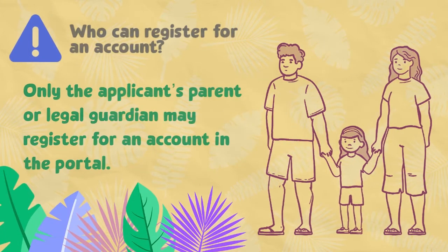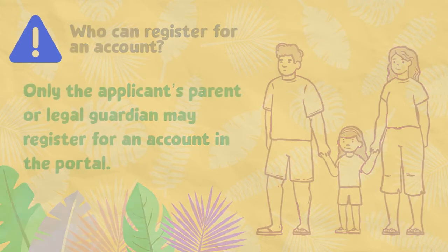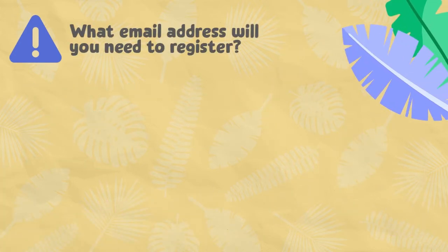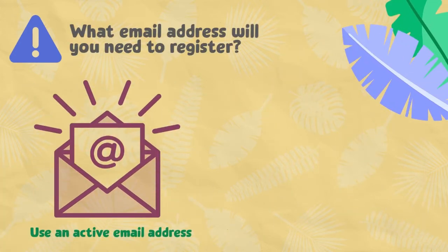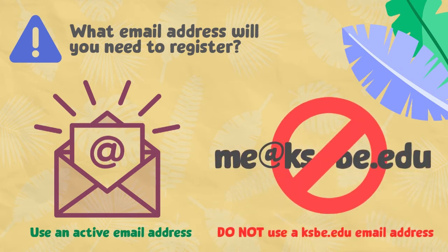Only the applicant's parent or legal guardian may register for an account in the portal. To register, you'll also need an active email address, which you'll provide during the registration process. This email address will be used for all admissions correspondences. For KS staff, you may not use your KS email address, so make sure you use a different one.